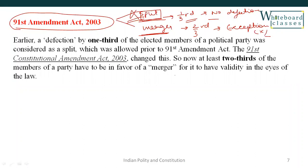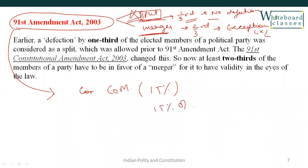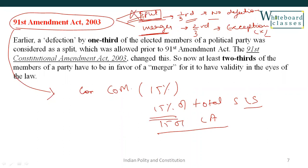The 91st Amendment also made another change — not related to anti-defection but to the Council of Ministers. It capped the Council of Ministers at 15% of the total strength of the house, both at the union level and for state legislative assemblies. This provision was also introduced by the 91st Amendment.